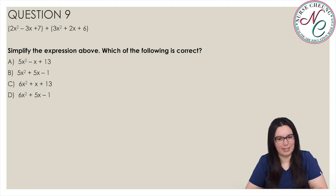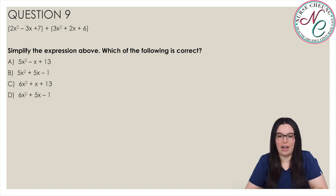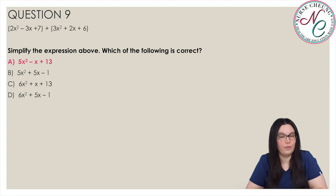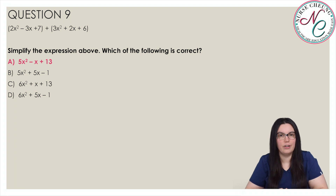2x squared minus 3x plus 7 plus 3x squared plus 2x plus 6. Simplify the expression above — which of the following is correct? Is it A, 5x squared minus x plus 13; B, 5x squared plus 5x minus 1; C, 6x squared plus x plus 13; or D, 6x squared plus 5x minus 1? The correct answer is A, 5x squared minus x plus 13. Combining like terms: 2x squared plus 3x squared is 5x squared, negative 3x plus 2x is negative x, and 7 plus 6 is 13.